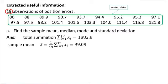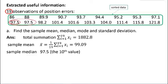Next, since the sample size is 19, median is 19 plus 1 over 2, which is the 10th value of the sorted data, 97.5. Mode is 97.5 since it appears twice, while all other data appear only once.